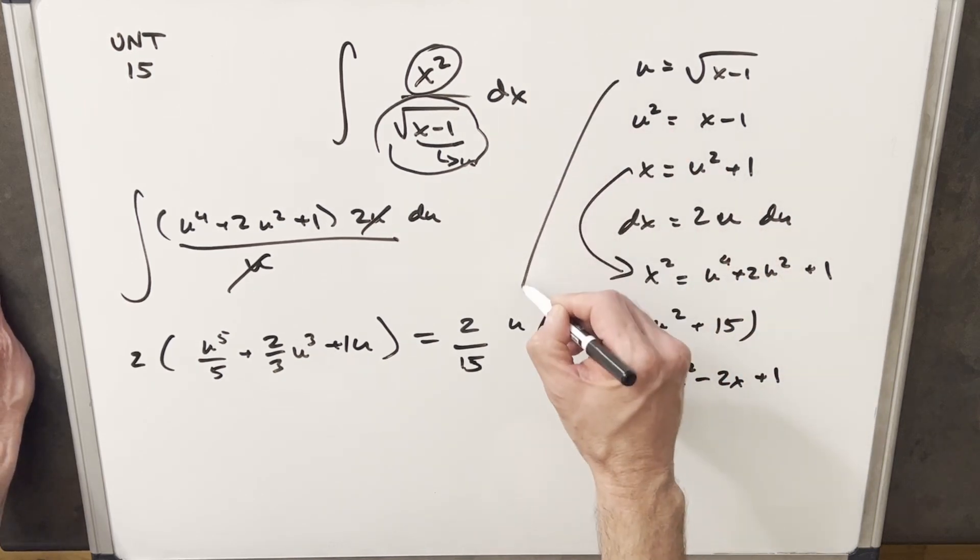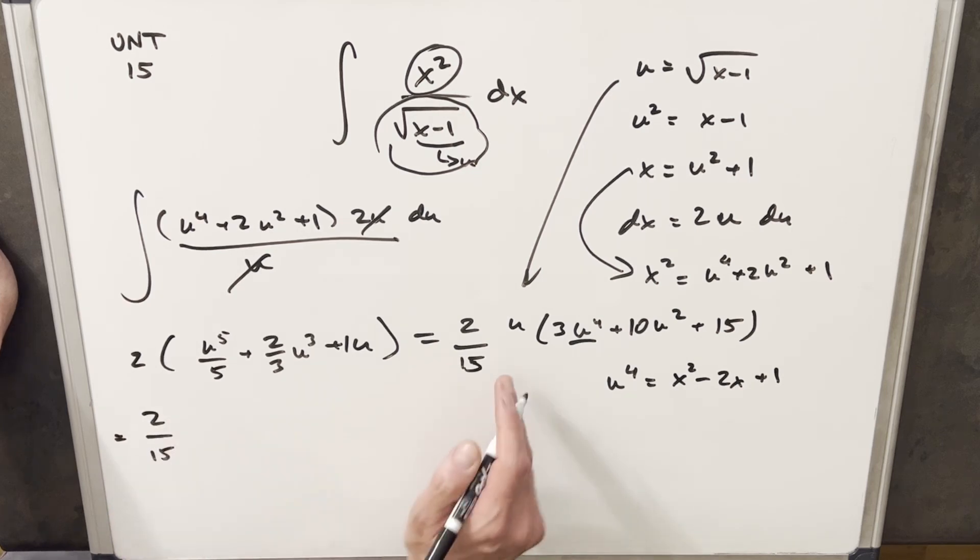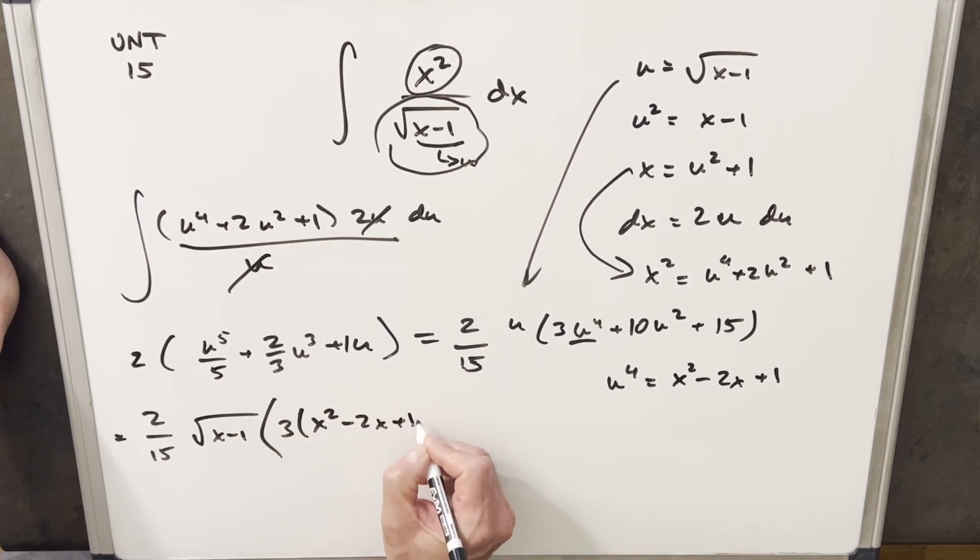Okay, now we're ready to back substitute. But we have u, u squared, and u 4th, so that should make it pretty easy. So we're going to have 2 over 15. u is just going to be square root of x minus 1. Then we're going to have 3. This is our u to the 4th, so we'll have to distribute it. We'll have to multiply this out in a second. But we'll write that in.